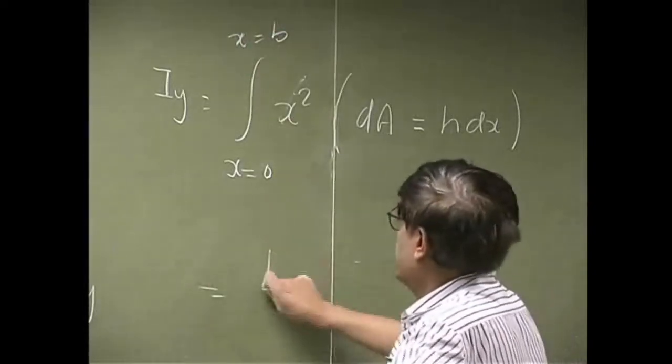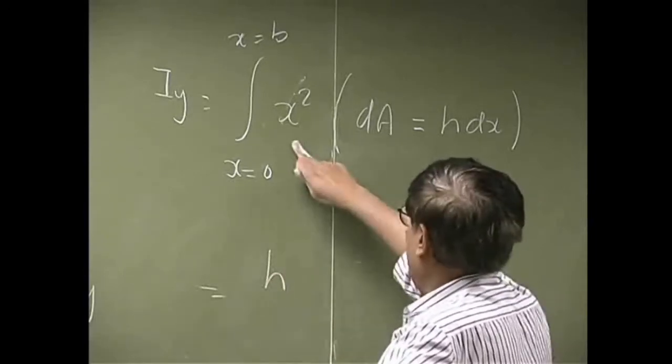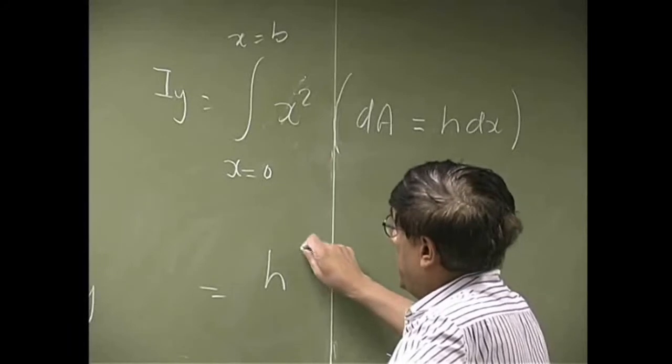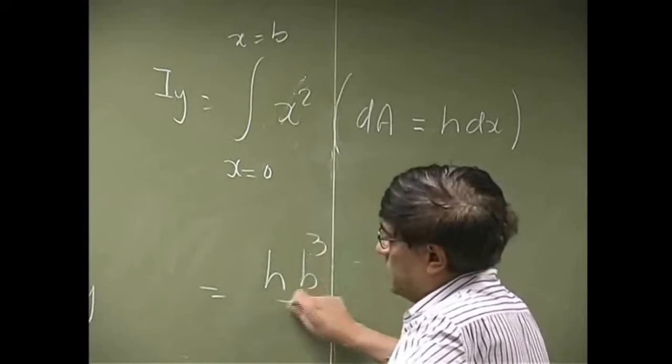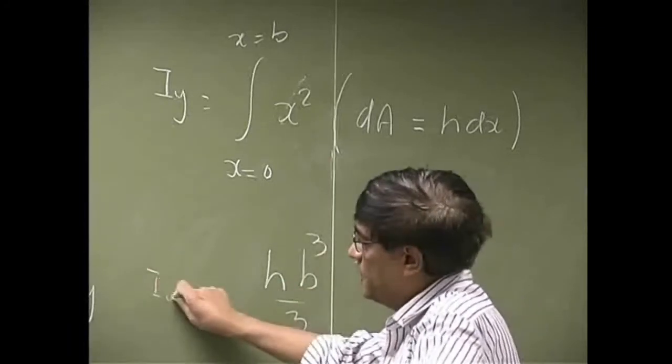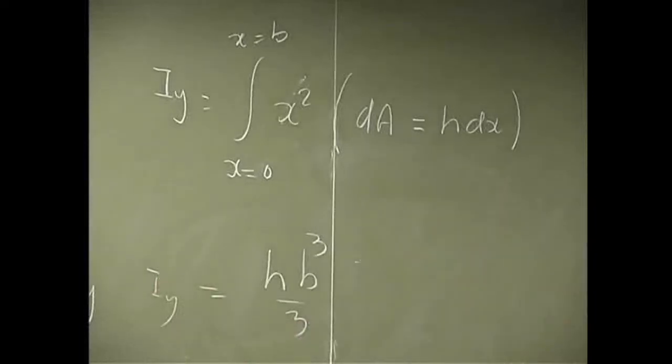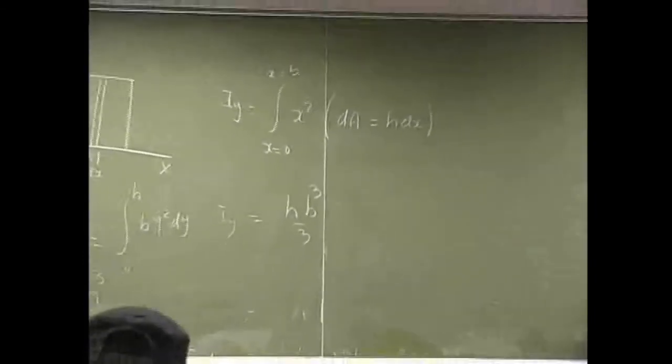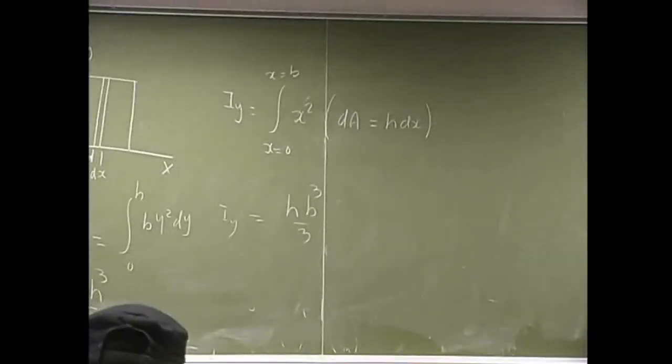So, if h comes out, you have x squared, this is x cubed over 3. So, that will be h, b cubed over 3, this is Iy. Those are the equations for the Ix and Iy of the rectangular area.